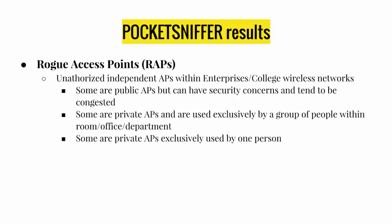Let's talk about a Pocket Sniffer experiment. First, let me introduce Rogue Access Points — unauthorized independent APs within enterprise or large wireless networks. For example, UNM's wireless network has Lobo Wi-Fi, Lobo Guest, and Lobo Secure. But if you scan the area, you can see other APs not affiliated with UNM — these are Rogue Access Points, or RAPs. Some RAPs have security concerns and tend to be congested. Some are private APs used exclusively by a group of people within a room, office, or department, while others are used by just one person alone.